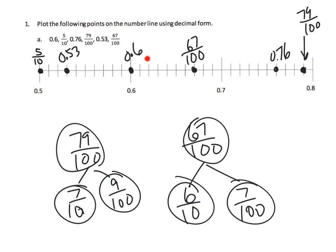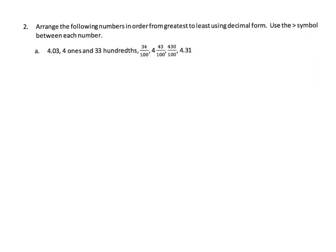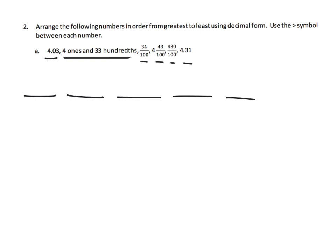Now that all these numbers are located on the number line, we immediately know the order from least to greatest. For the next problem, we could use a number line if we chose, but we're going to do it in number form. We need to put them from greatest to least and write them in decimal form. There are six numbers, so let's write those down — one through six — from greatest on the left to least on the right.